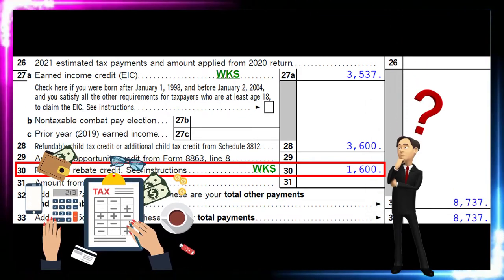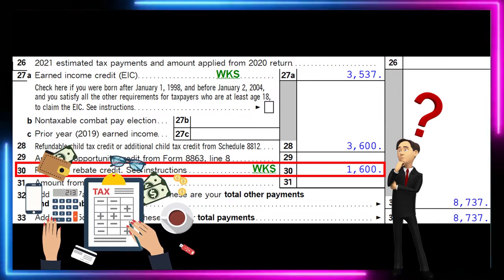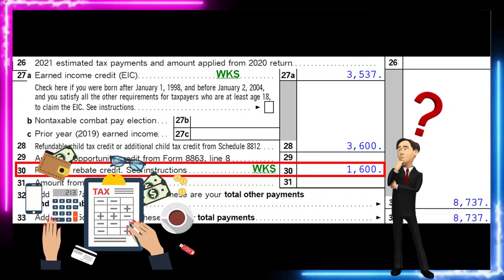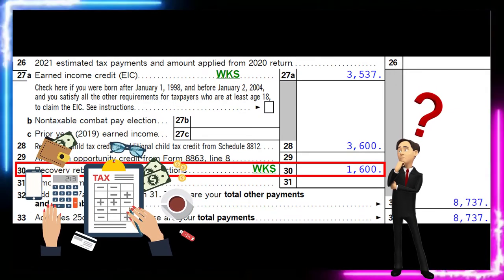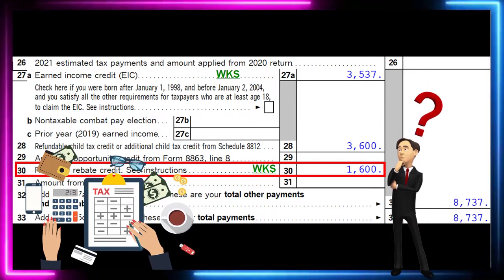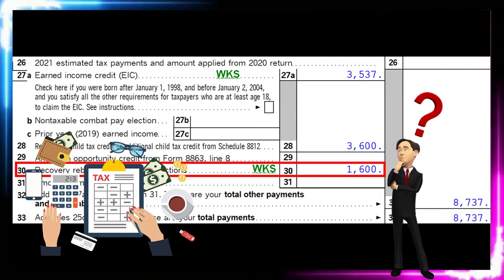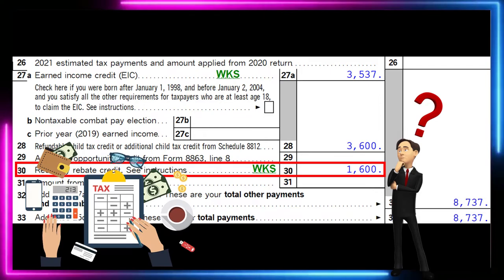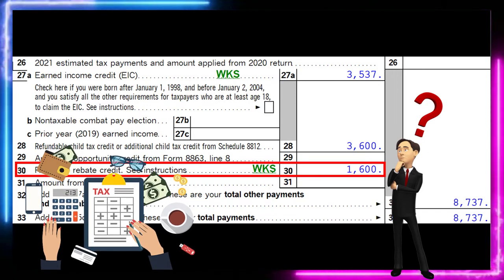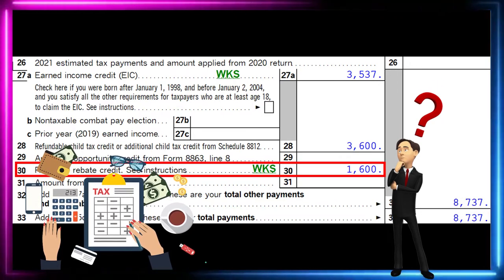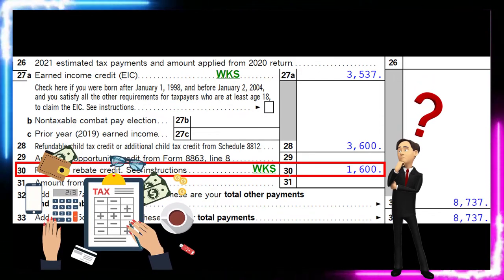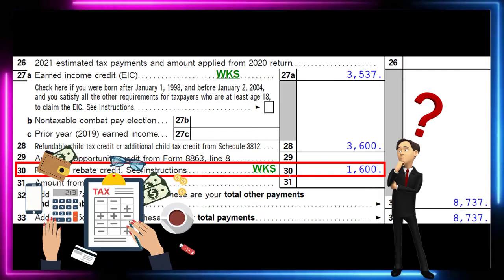It's a little more confusing with these credits because we've never seen a recovery rebate credit before, and the names are nothing similar — the stimulus payments being a prepayment of the recovery rebate credit. They didn't call it a prepayment; they didn't name it the recovery rebate credit. If everything went correctly, you would have gotten the entire prepayment amount already, and therefore you wouldn't really be reporting anything on the tax return. The tax return is here to fix the problem where the stimulus or economic impact payments did not go out properly.